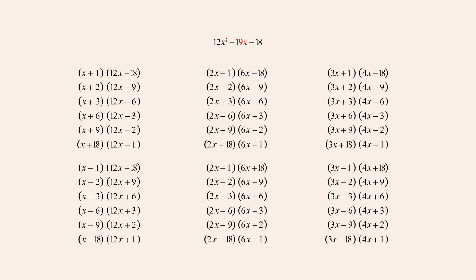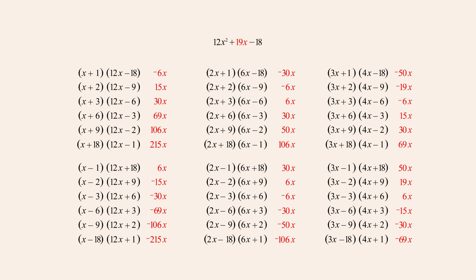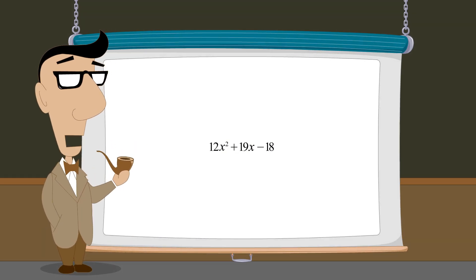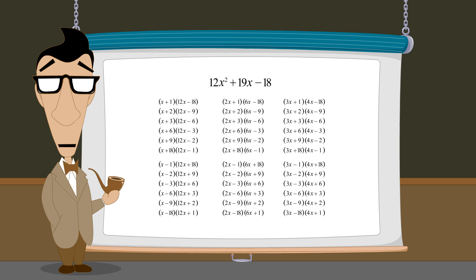Adding the outer products to the inner products for each factor pair, we get these results. We see that only one factor pair in this list has a sum of outer and inner products that equals 19x. Therefore, the factors of this quadratic expression are 3x-minus-2 and 4x-plus-9. Although the inspection method is sometimes the quickest way to factor a quadratic, factoring this quadratic turned out to be quite a lengthy process since there were many possible factors that needed to be considered.